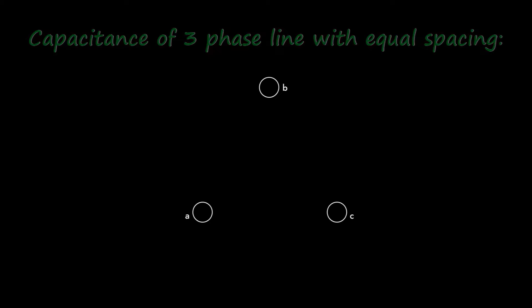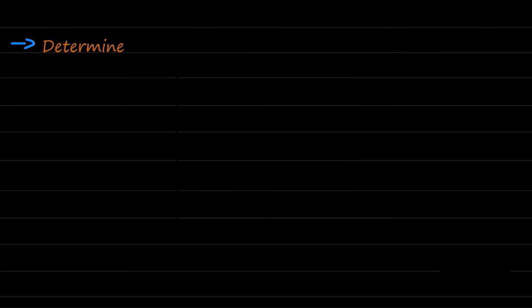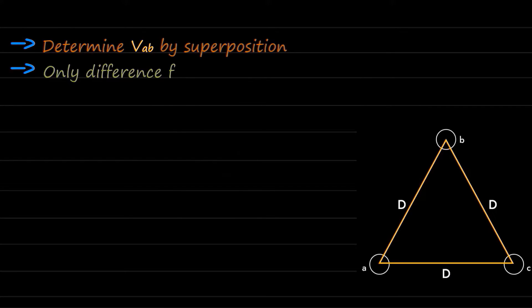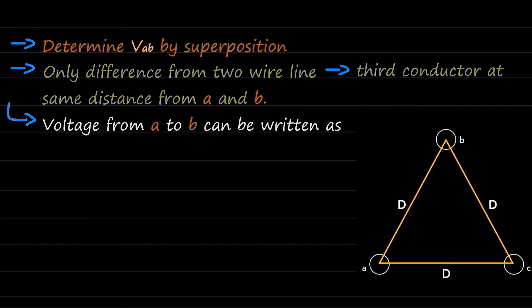Moving on to the capacitance of three-phase line with equal spacing, three identical conductors of a radius r of a three-phase line with equal spacing are shown in the figure. Like in the previous case for two-wire line, we can determine vab by superposition. The only difference in this case is that there is a third conductor which is at same distance from both a and b. The expression for the voltage from a to b can be written as